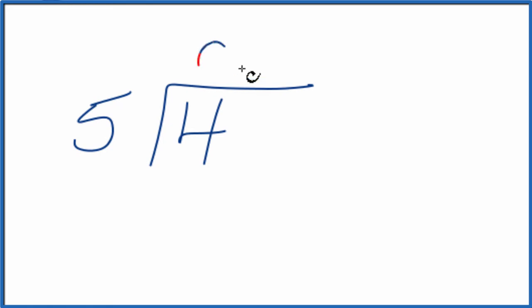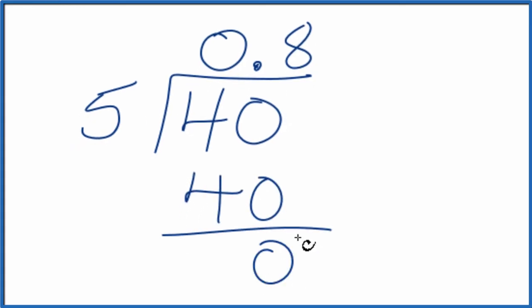So five doesn't go into four, so we're going to have to put a zero here and a point, but now we can think of this as 40. Eight times five, that's 40, gives us zero here.